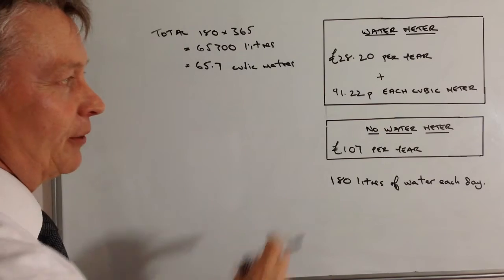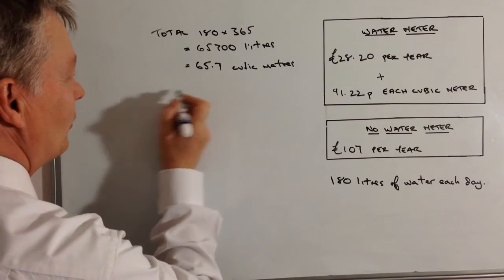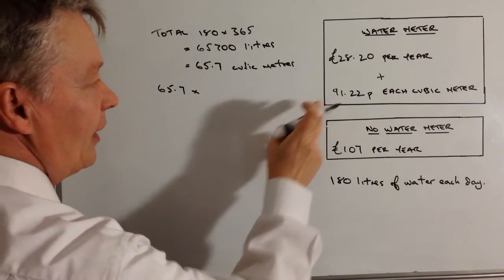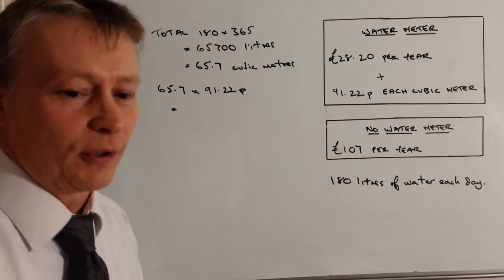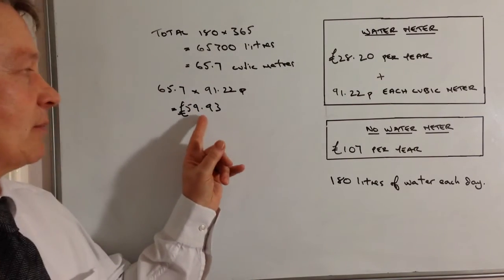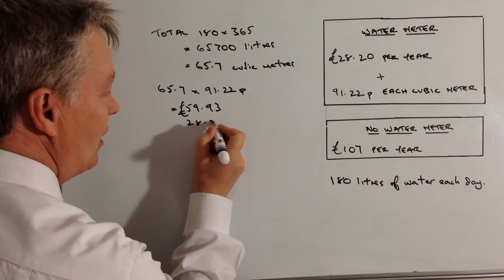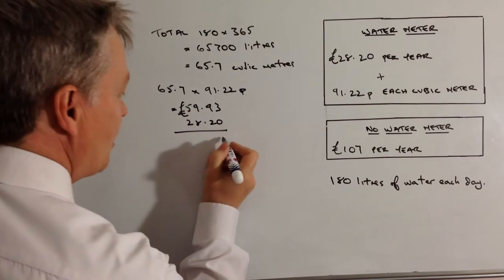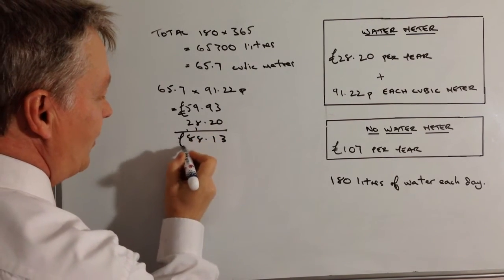Okay so he's using 65.7 cubic metres at a price of 91.22 pence. So the total meter charge is going to be 65.7 multiplied by 91.22 pence and if I put that into a calculator that's going to give me a total cost of £59.93. So that's actually going to be his meterage charge over the year and we need to add that to the standing charge which is £28.20. So that means his total bill using a water metre is going to be £88.13.